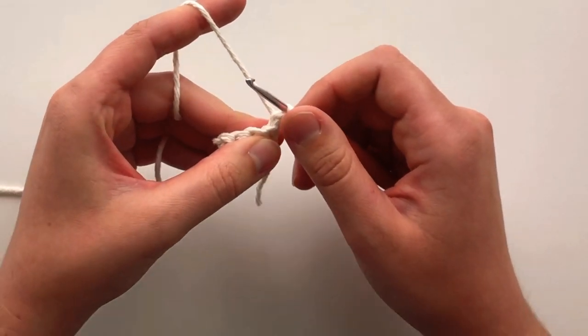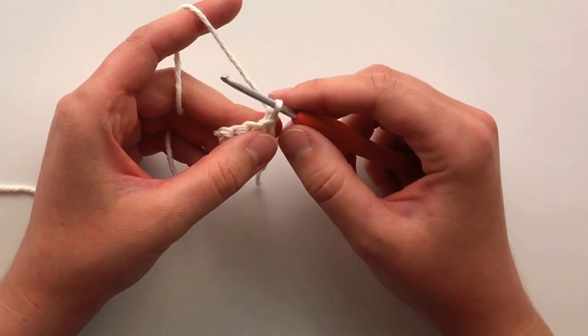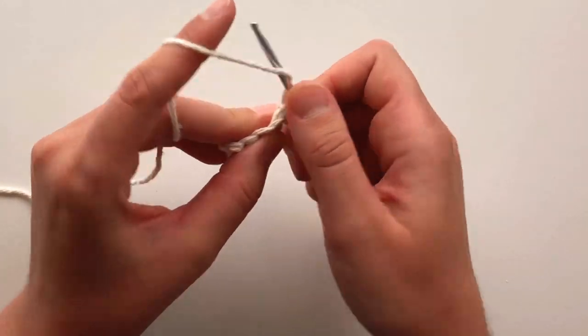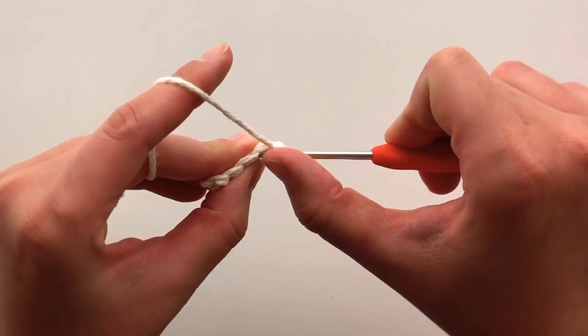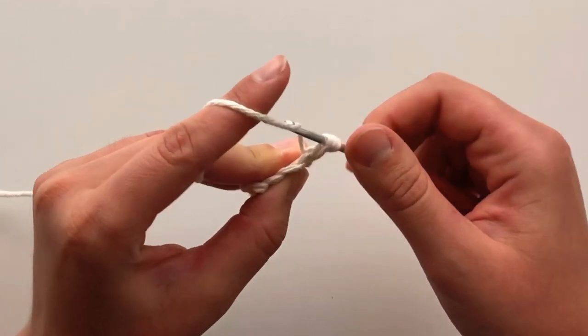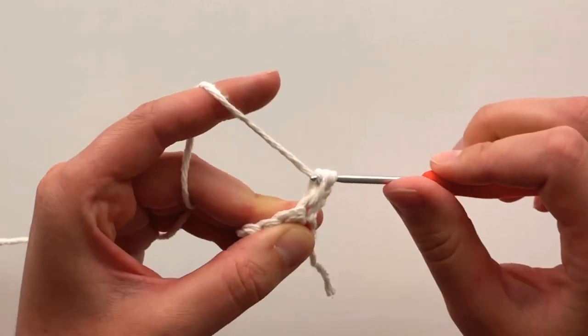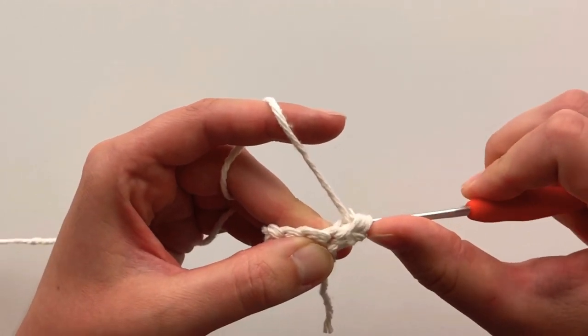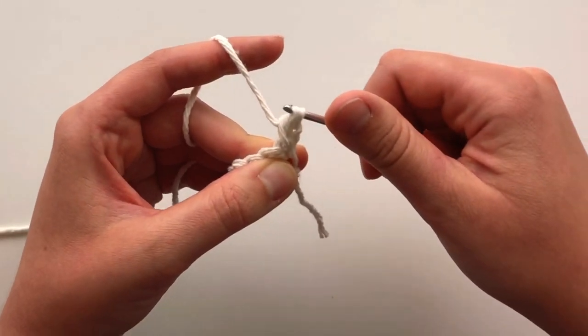The pattern for this will be linked below in the description. For this row, your very first stitch will be a modified bobble stitch. Your next stitch will be a single crochet, then another modified bobble stitch, and another single crochet.